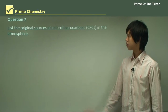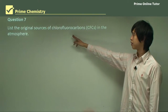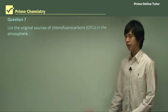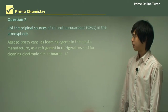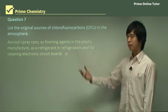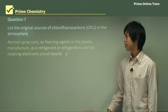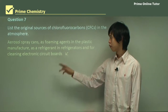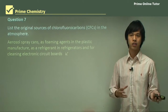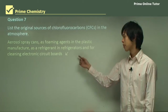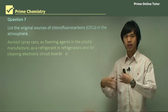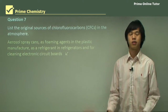Question seven: list the original sources of chlorofluorocarbons in the atmosphere. Where did we first start using them? Aerosol spray cans — when we spray our deodorant. Foaming agents to make styrofoam and similar things in plastic manufacture. Refrigerants — that fluid pushed around to make one place cold. And cleaning electrical circuit boards — because CFCs are inert, they push away dust without any damage to components.